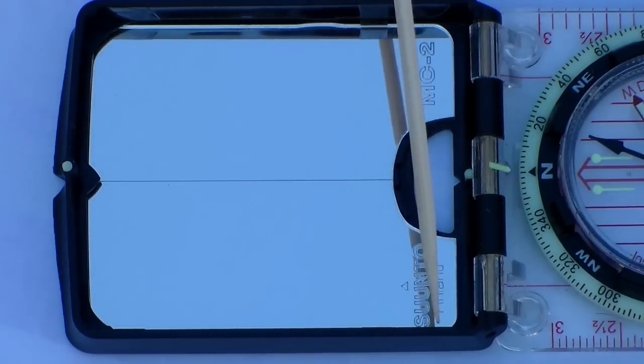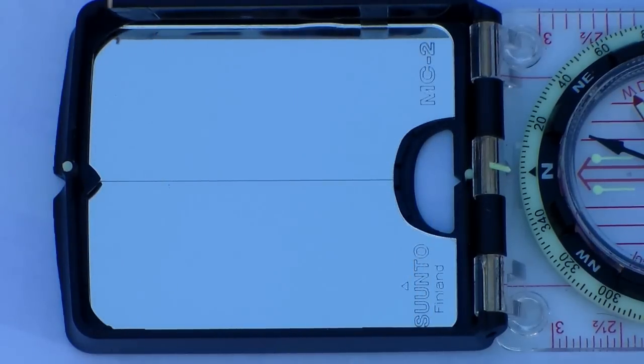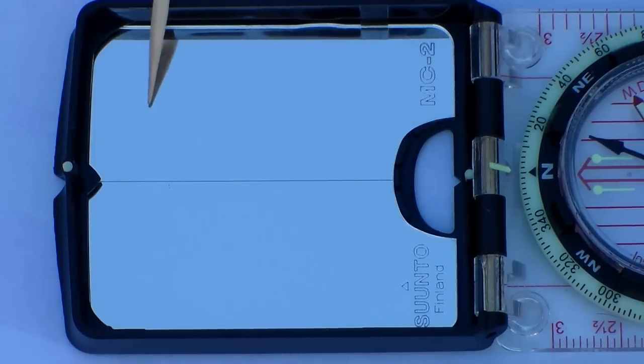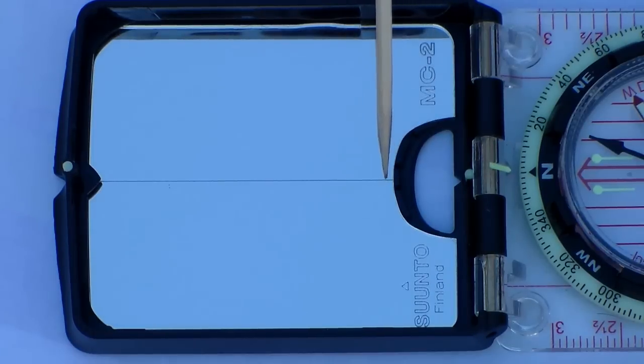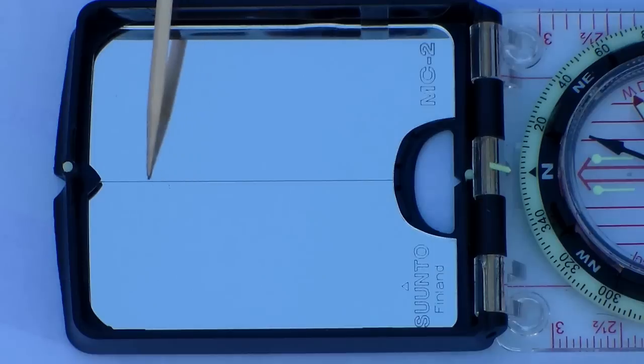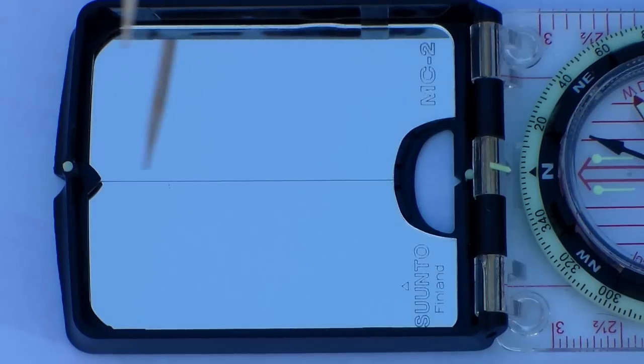The first part will be the cover itself. It's in hard plastic. The interior has a mirror with a sighting line going down the center portion. When closed, the cover will protect the bezel ring of the compass.